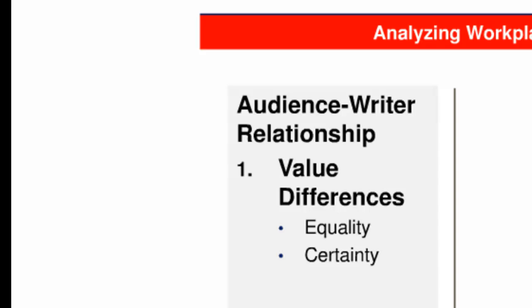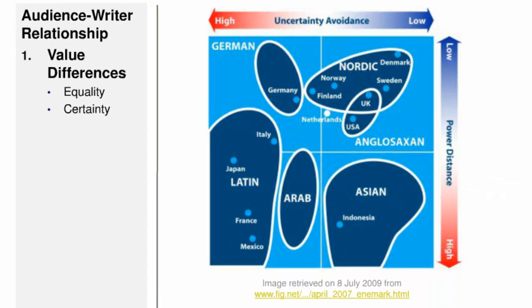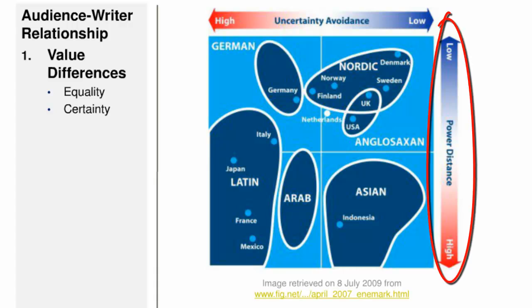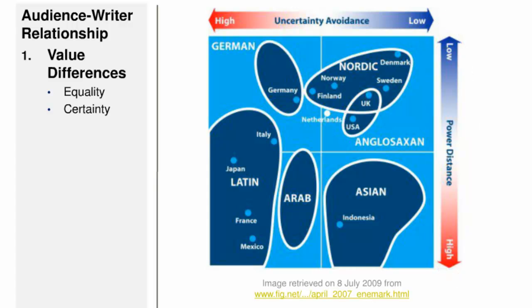The first category describes differences in values between the writer and the audience. The work of Geert Hofstede, who studied IBM employees across the globe, distinguishes between the values of national cultures based on how much they value equality — labeled as power distance. For instance, the US culture values equality, or low power distance. A supervisor who says 'let me know how much time you need to complete the project' may get a favorable response from a Swedish subordinate, who likes being treated as an equal, but an unfavorable response from an Indonesian subordinate, whose culture values power distance and expects bosses to take responsibility for such decisions.